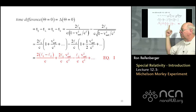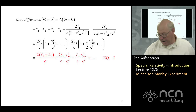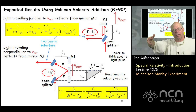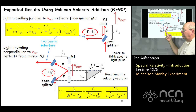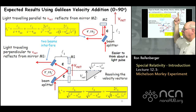We're interested in the time difference between the path length parallel to the drift velocity and the path length perpendicular to the drift velocity. So I take the difference between T1 and T2. With a few lines of algebra, I find the time difference when the apparatus is oriented at theta equal to zero.